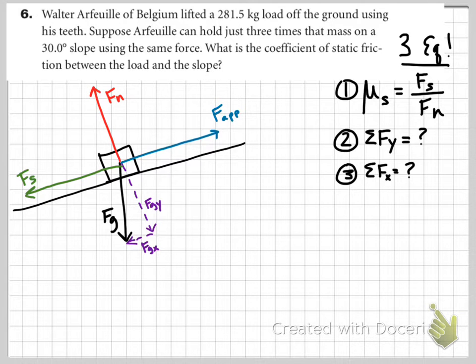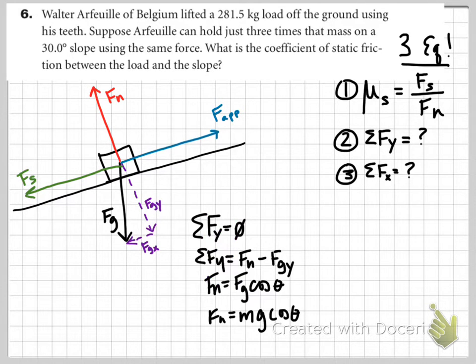Let's start with sum of forces on the y. Is it levitating? No! Therefore sum of forces on the y equals zero. That's fn minus fgy. fn therefore equals fg cosine theta and fn equals mg cosine theta. That gives us one piece to plug into our mu s equation.